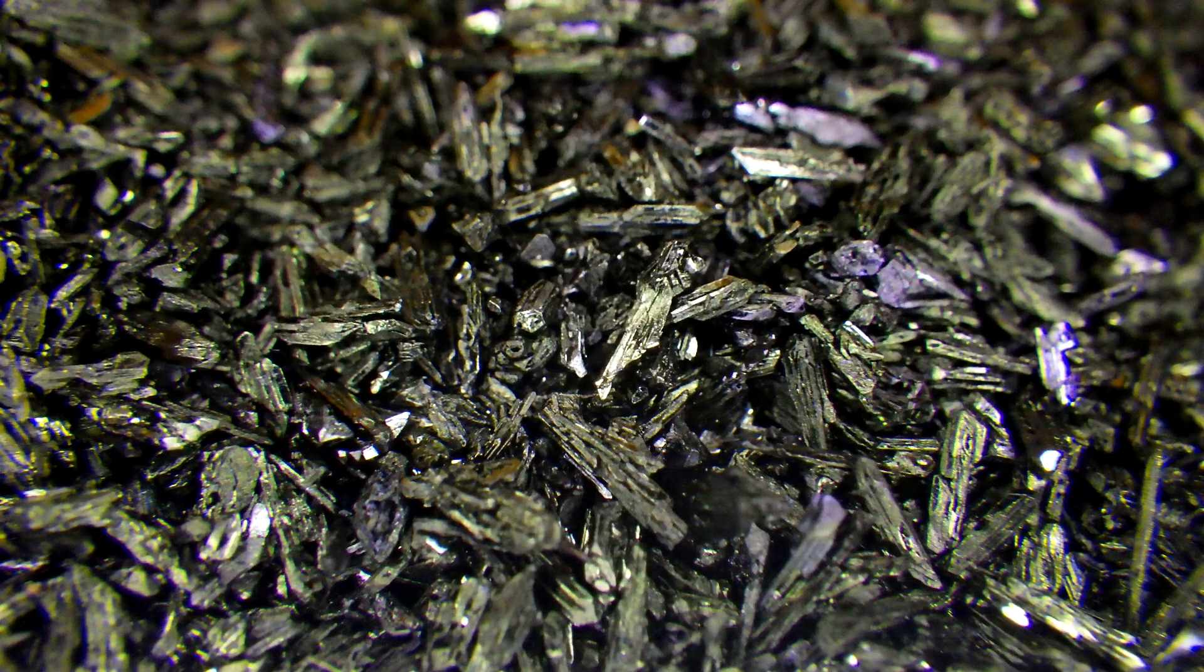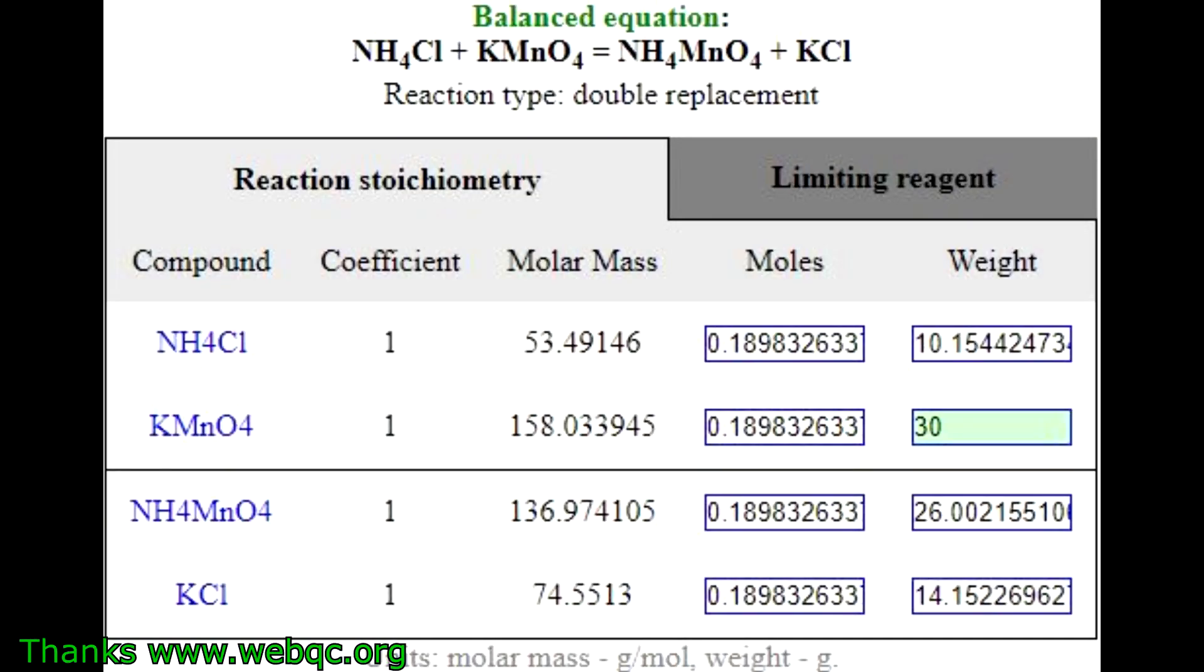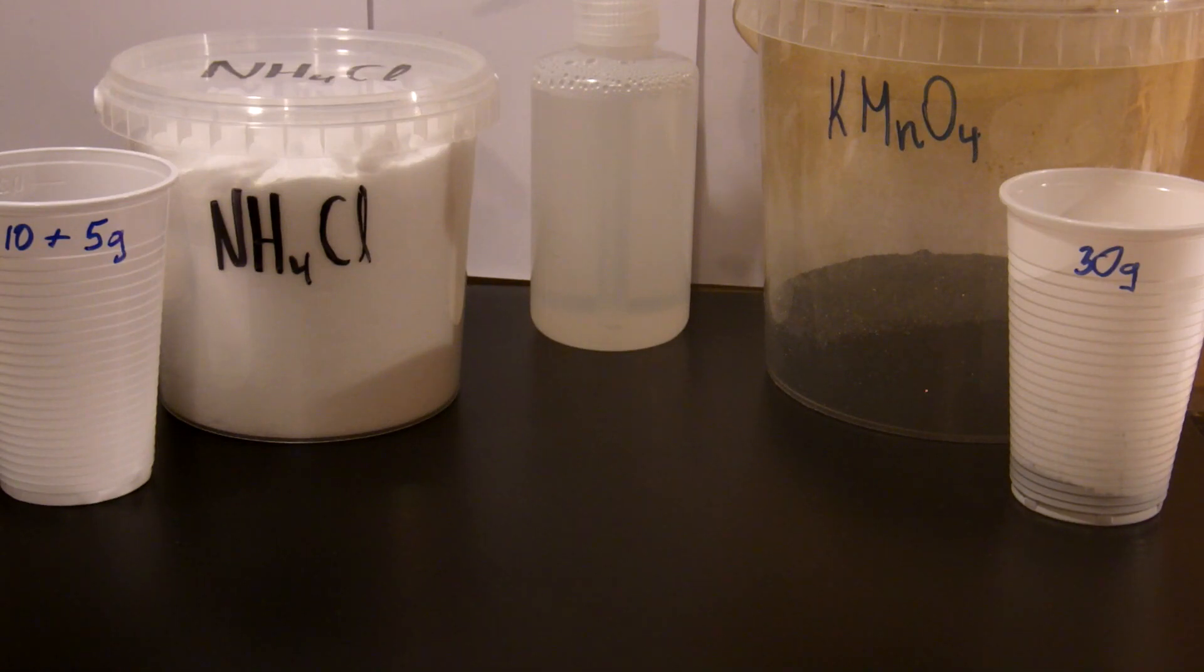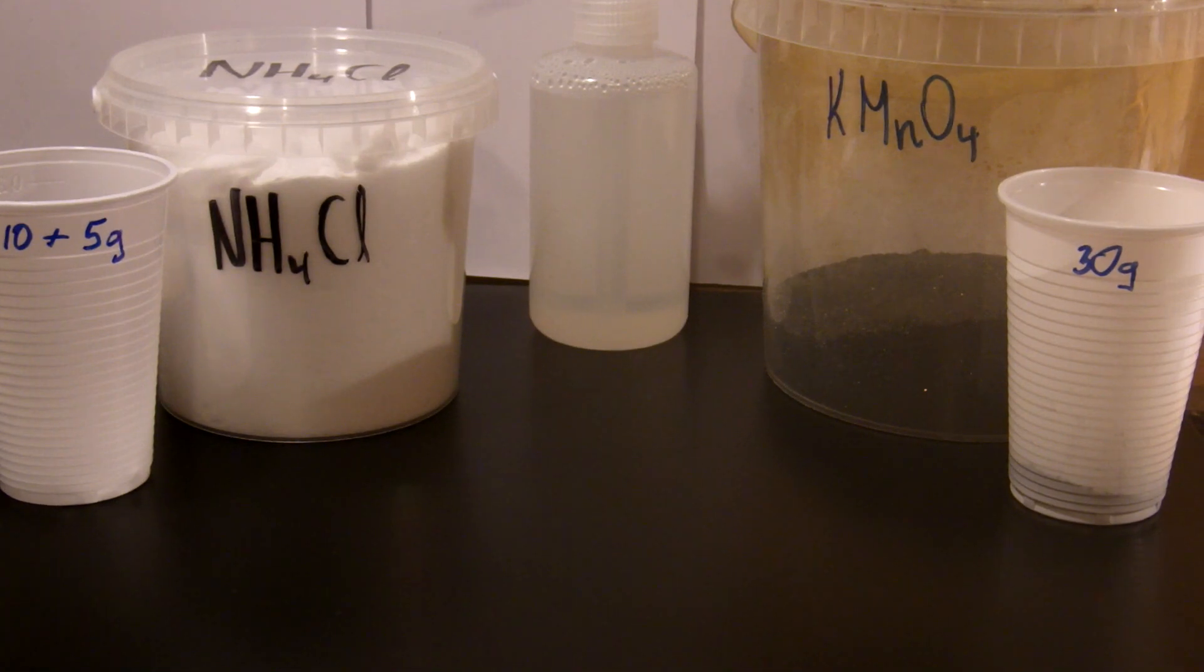I am going to use only two chemicals for this single reaction: potassium permanganate and ammonium chloride. I am basing this reaction on potassium permanganate. I will use 30 grams of it. For that I'll need little over 10 grams of ammonium chloride, but I'll use 50% excess, so 15 grams. I have already weighed the chemicals.